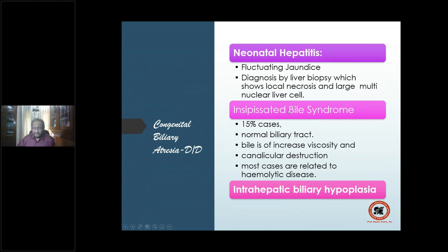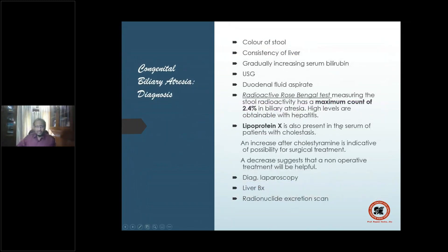Inspissated bile syndrome: normal biliary tract but very high viscosity bile, leading to canalicular obstruction, mostly related to hemolytic jaundice. For diagnosis: color of stool, consistency of liver, gradually increasing serum bilirubin, and ultrasound. Duodenal fluid aspirate showing no bile is helpful. Radioactive rose bengal test is confirmatory — rose bengal radioactivity in stool is maximum 2.4 percent in biliary atresia. Lipoprotein X is also present in patients with cholestasis.